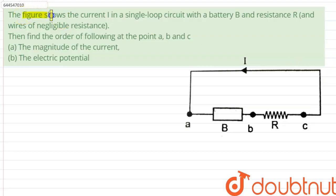Hello everyone, the figure shows the current I in a single loop circuit with a battery B and resistance R and wires of negligible resistance.